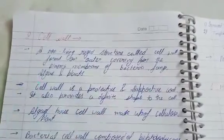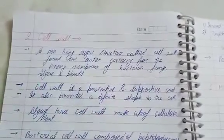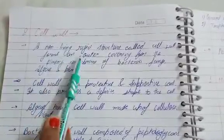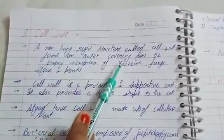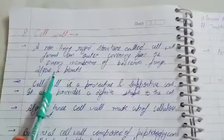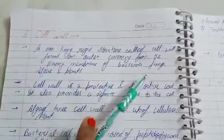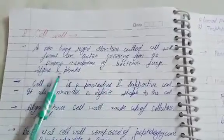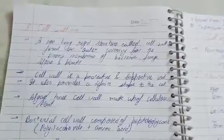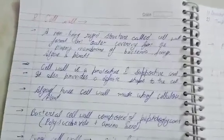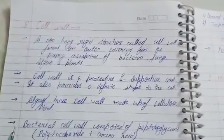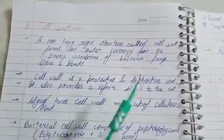The next cell envelope is the cell wall — a non-living rigid structure. Cell membrane is in living form, and cell wall is a non-living rigid structure that forms an outer covering for the plasma membrane of bacteria, fungi, algae, and plants. Cell wall is not present in every organism or every cell.